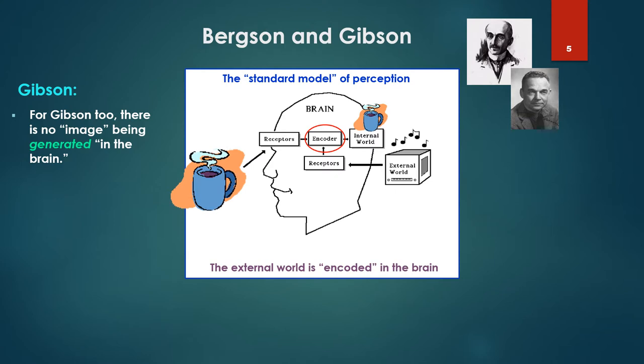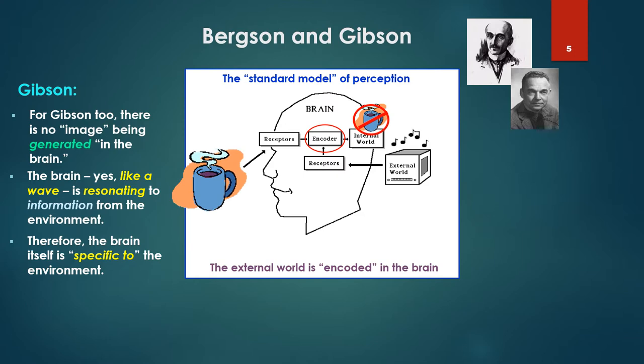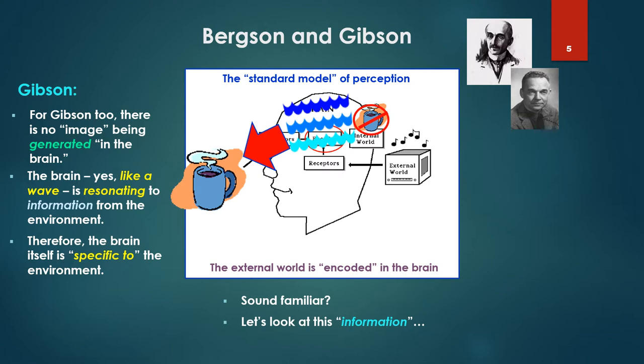For Gibson, there is no image being generated in the brain. Cross out the image. As we saw, this is however the standard model of perception. We have receptors receiving information from the external world - the eyes, the ears. There's an encoder. Then that encoding results in the internal world, which of course we know can look nothing like that coffee cup in the first place, which begins the whole hard problem. So the brain, yes, in Gibson's framework is like a wave. It's resonating to the information from the environment, information being a key word we'll see here. Therefore the brain is specific to the environment, the coffee cup on the table. Sounds a bit familiar, does it not? Like a holographic process specifying a source in the environment.